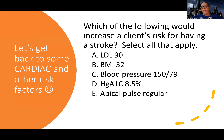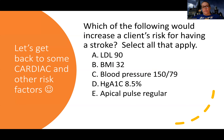BMI of 32: less than 25 is normal, 25 to 30 is overweight, and 30 and above is obese. So a BMI of 32 means the patient is obese. Is obesity a risk factor for stroke? Yes — obesity is a very heavy cardiovascular risk factor, so we include it in stroke risk factors.